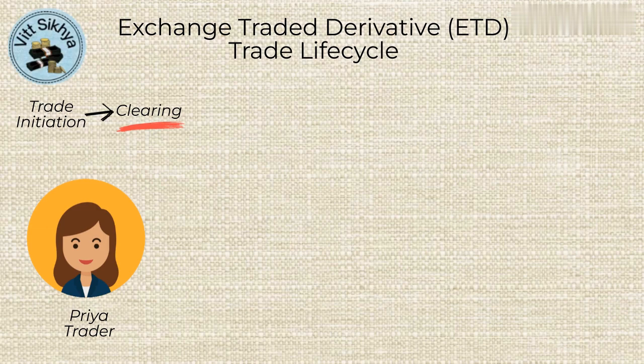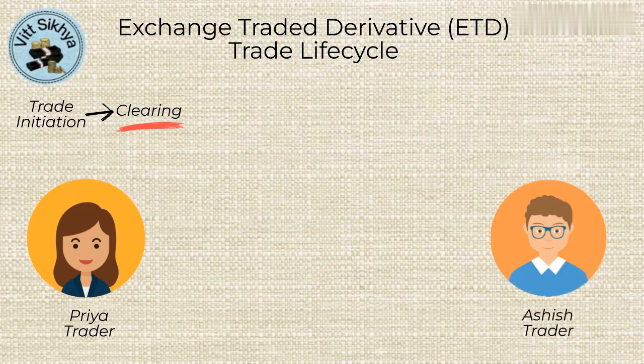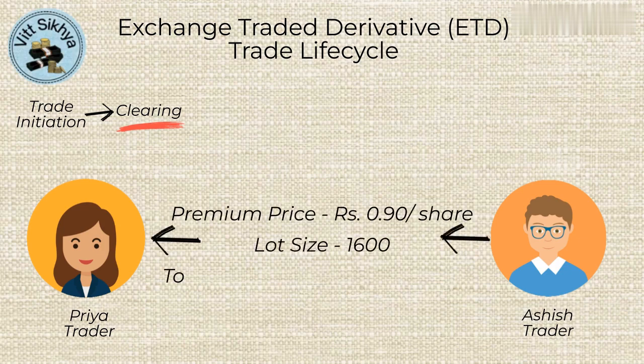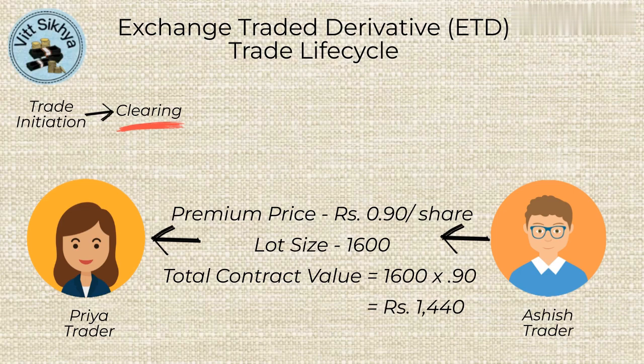Let's say another trader named Ashish buys the short option from Priya for a price of 90 paise per share. The lot size is 1600 shares, so the total contract value is Rs. 1440.